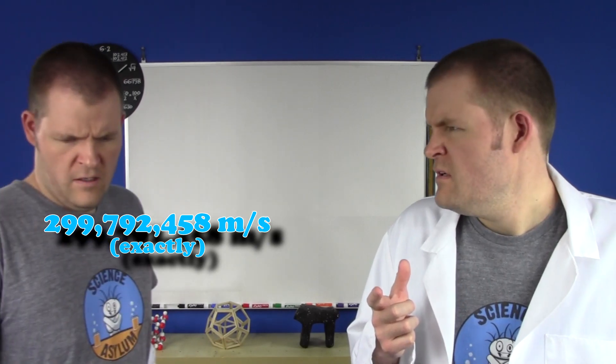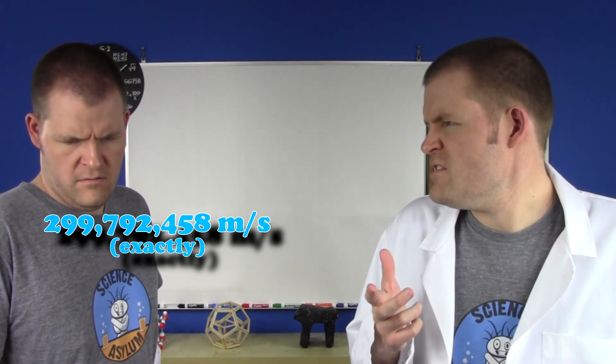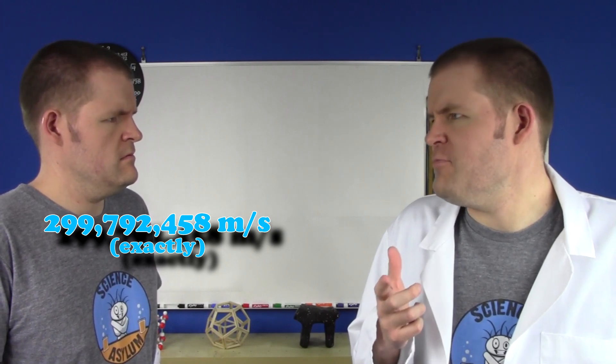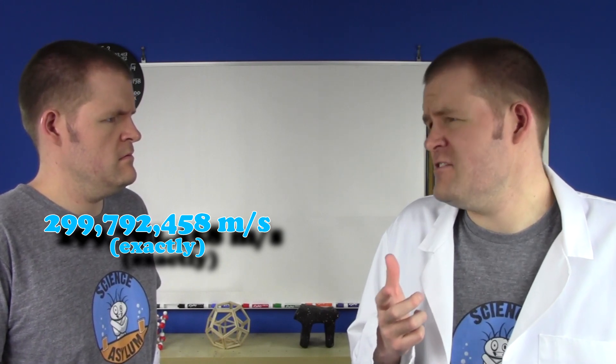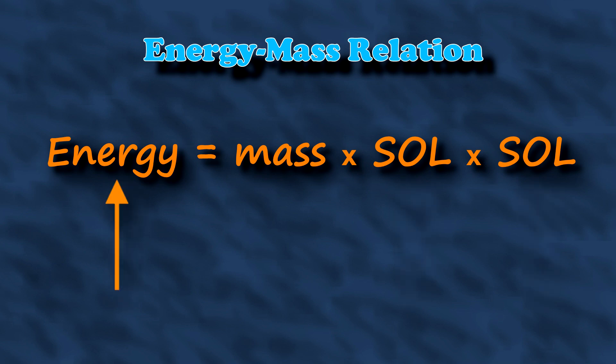Per second! The word light is irrelevant — that number shows up in a lot of places that have nothing to do with light. And it's huge! And there are two of them in there. That means this E is a really, really, really big number — so much bigger than any other energy we deal with. Millions of millions of times bigger. The energy in me is a little over 8 followed by 18 zeros.